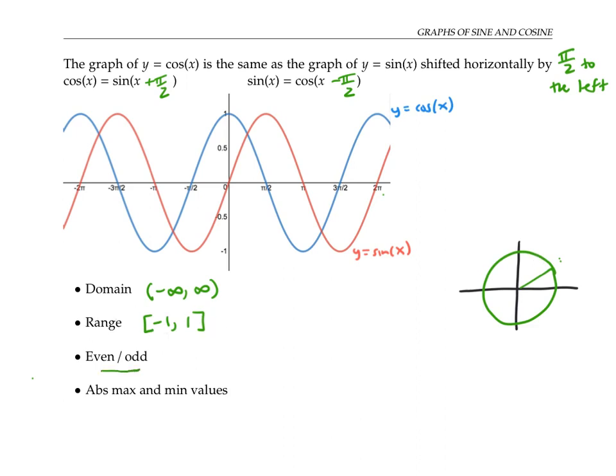As far as even and odd behavior, you can tell from the graph that cosine is symmetric with respect to the y axis and so it must be even, whereas the graph of sine is symmetric with respect to the origin and must be odd.